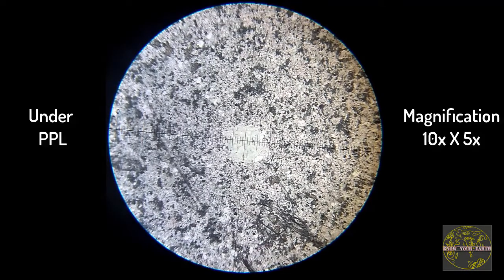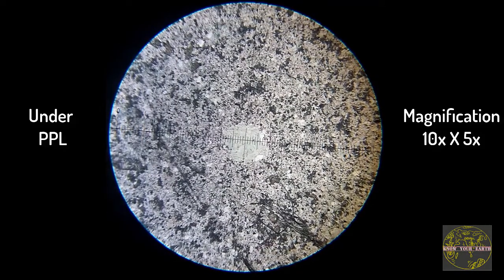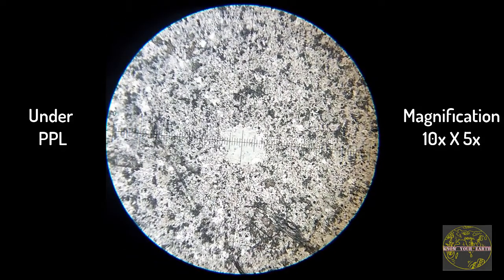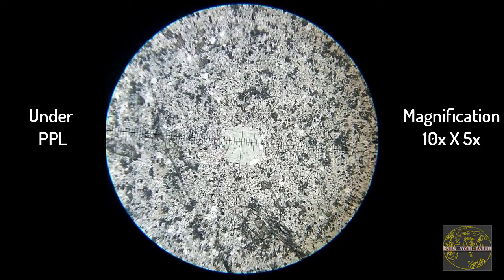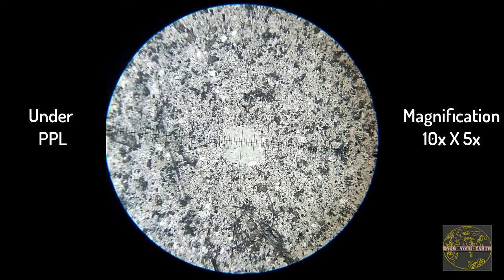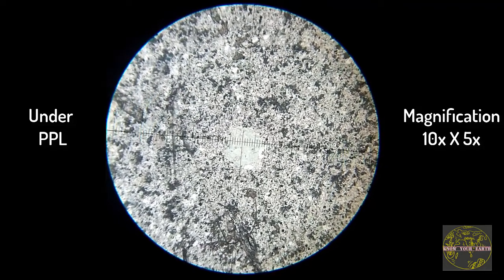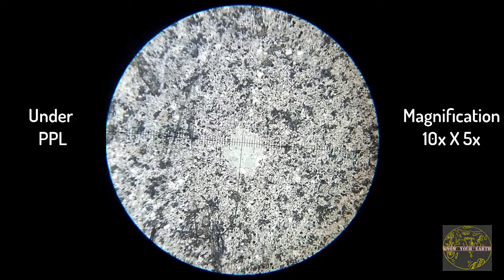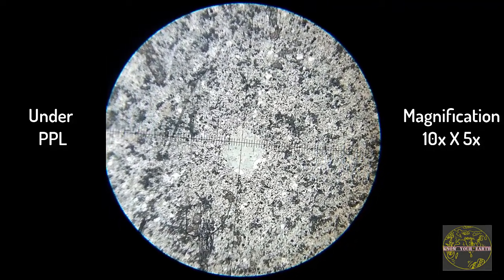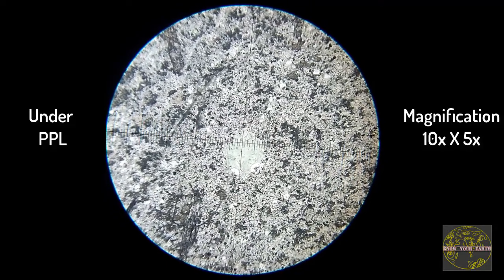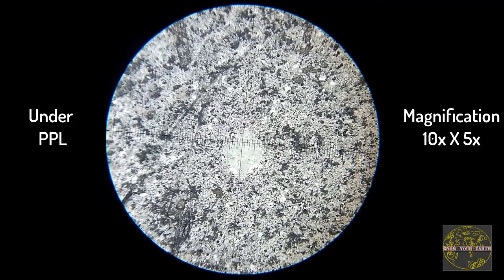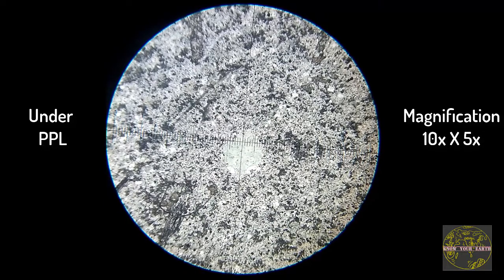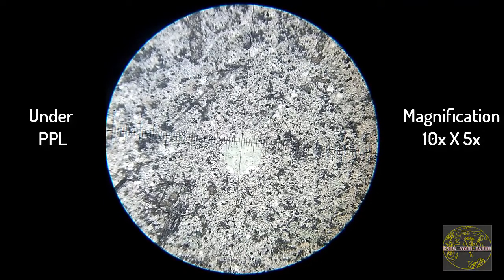Here we can see the thin section of basalt. It is characterized by fine grains of pyroxene, plagioclase, and glass. Under plane polarized light, pyroxenes are characterized by a high refractive index. Glass appears as green or colorless under plane polarized light.